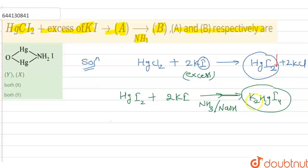HgI2—this is a precipitate, that is A. And K2HgI4, that is B. So A is a scarlet precipitate of mercuric iodide.